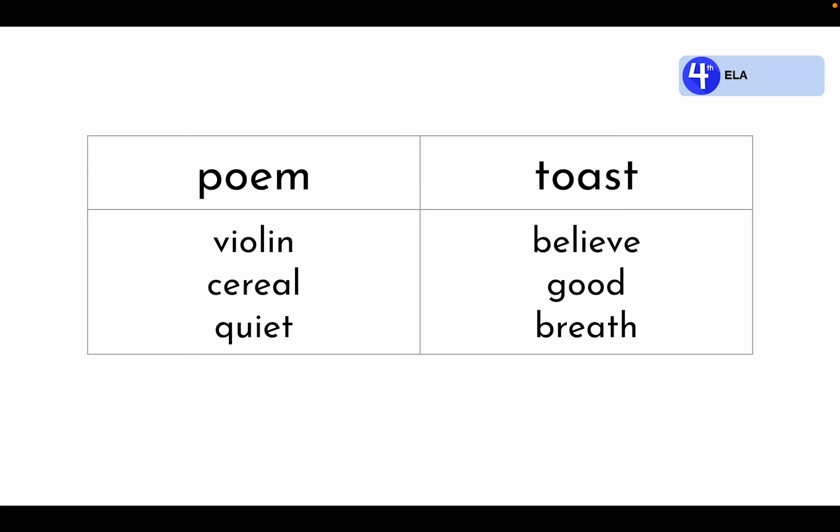Now let's look at the words underneath toast: believe, good, breath. In these words, the two vowels that are next to each other in that vowel syllable pattern are working together to make one sound. The i and e in believe are working together to make the e sound. In the word good, the letters o-o are working together to make the u sound. And in breath, the e and a are working together to make the e sound. When the vowels are working together to make one sound, there will not be a syllable break in between those vowels.